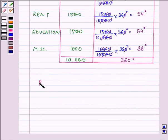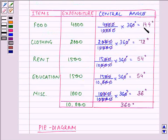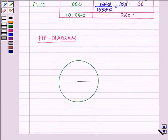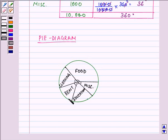Now we will be drawing out the pie diagram. Let us have a circle of any radius. First of all, we will be drawing out the 144 degree angle — it comes out to be somewhere here. We will join this point to the center, and this is the angle for food. Similarly, in the same manner, we have drawn all the respective angles for food, clothing, rent, education, and miscellaneous. So this is the required pie diagram.